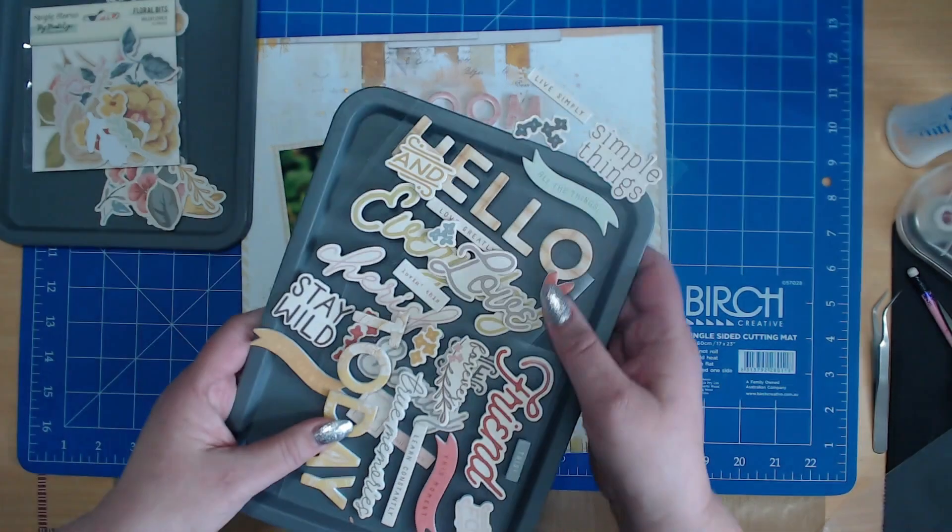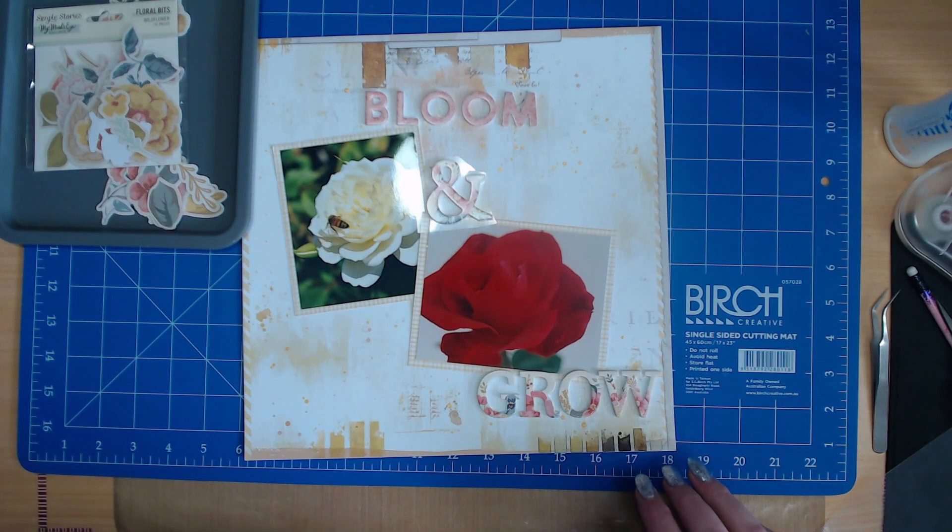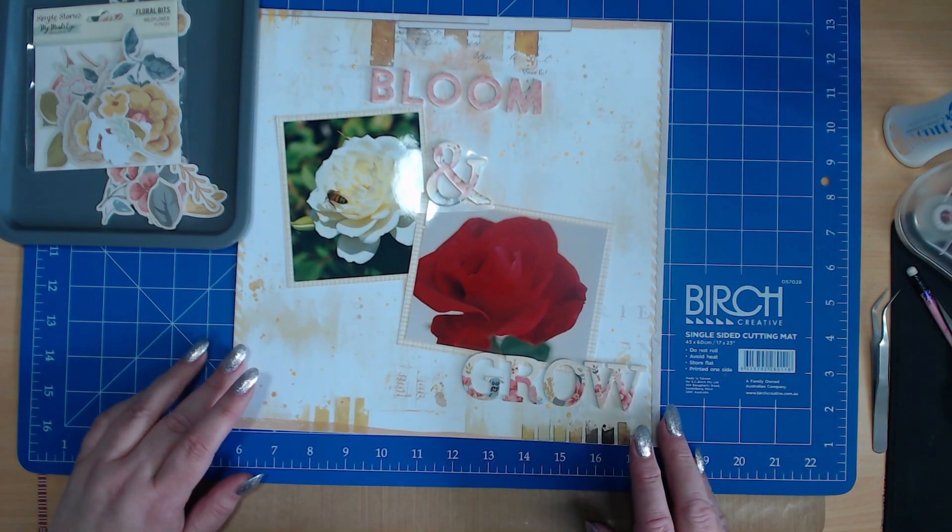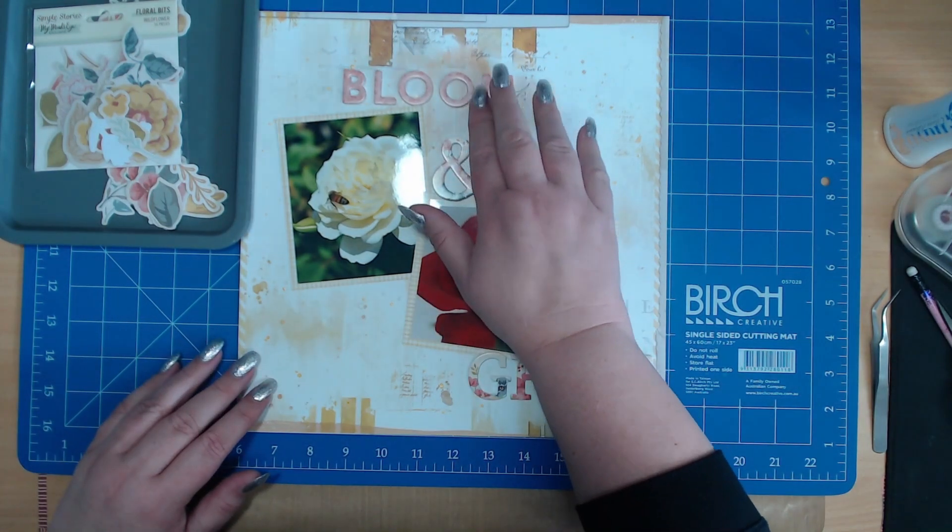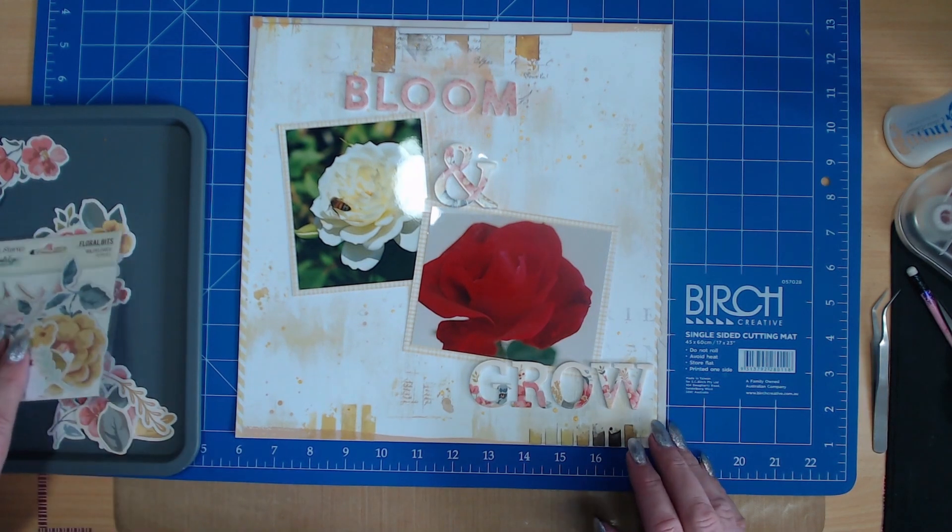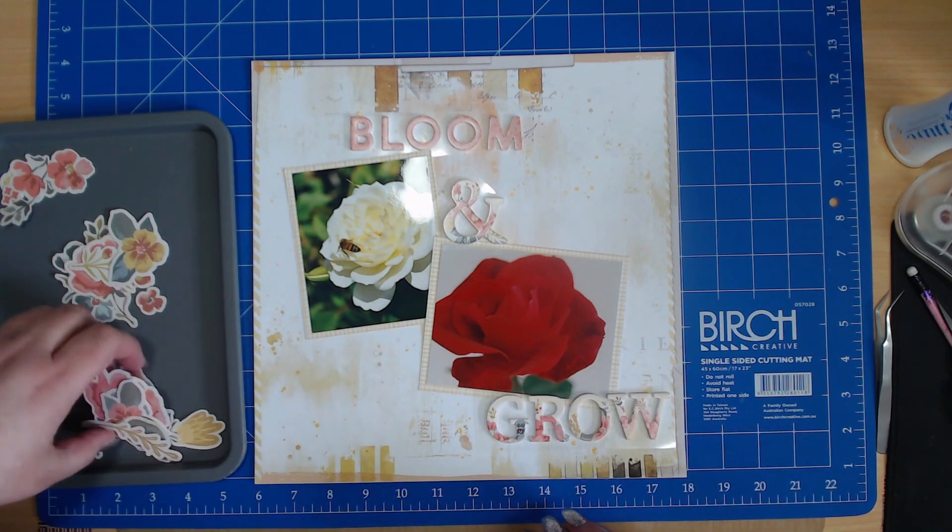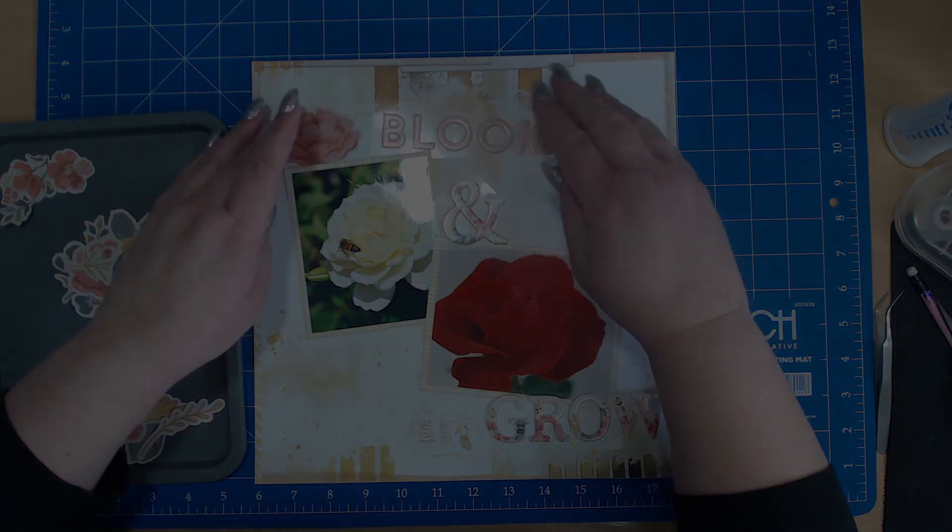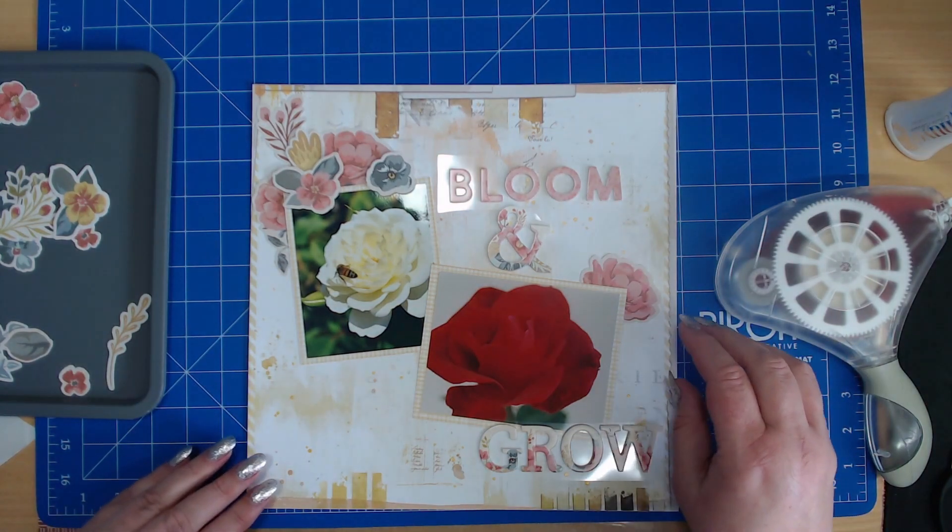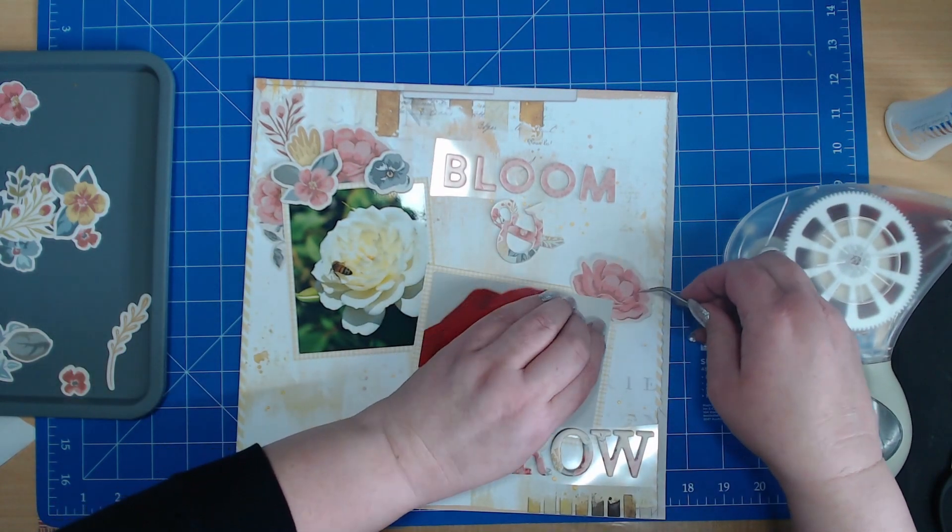I am using my Simple Stories My Mind's Eye foam stickers for the bloom and grow title and I really do like the way they look. I cut them out of the plastic sheet so that it makes it easier for me to use them so I can put them on my page without them sticking in the wrong spot. So, now I'm bringing forward my Simple Stories, My Mind's Eye floral bits and I am going to be working through and putting them around my photos. I'd sort of grouped the little bits into three different sections.